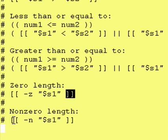And the next thing you can test for is non-zero length, which is going to be a dash n. Dash n for non-zero, dash z for zero.